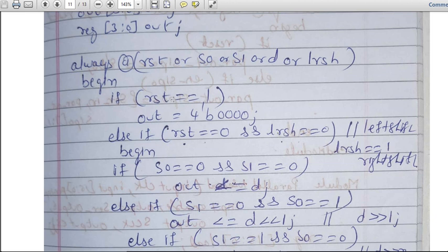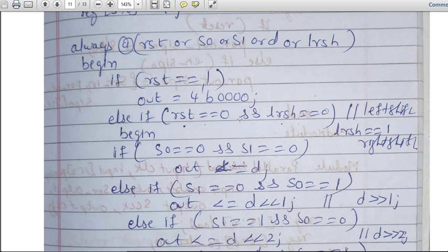Then if reset equals 1 - if reset is equal to 1, what does it mean? All should become zeros. So out will be equal to 4'b0000, meaning 4 bits all zeros.